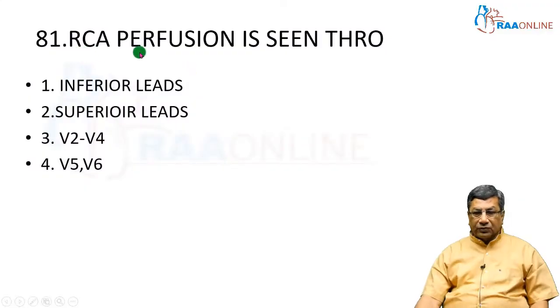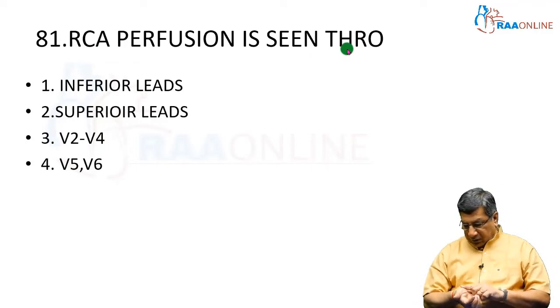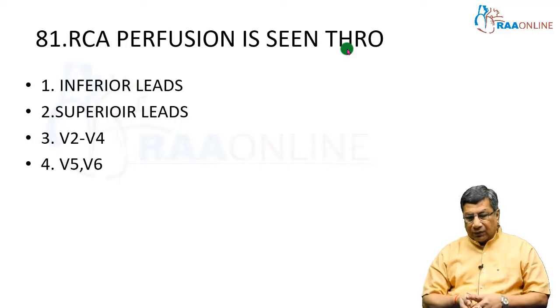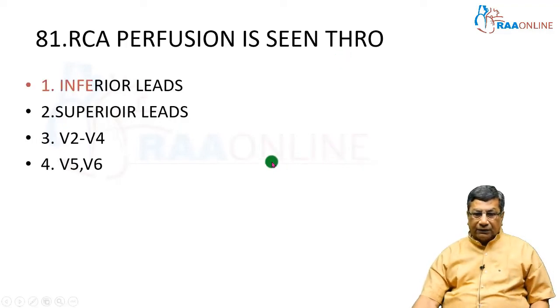The first question: RCA perfusion is seen through what leads? As you know, the right coronary artery supplies the inferior wall. The inferior wall is represented by L2, L3, and aVF.